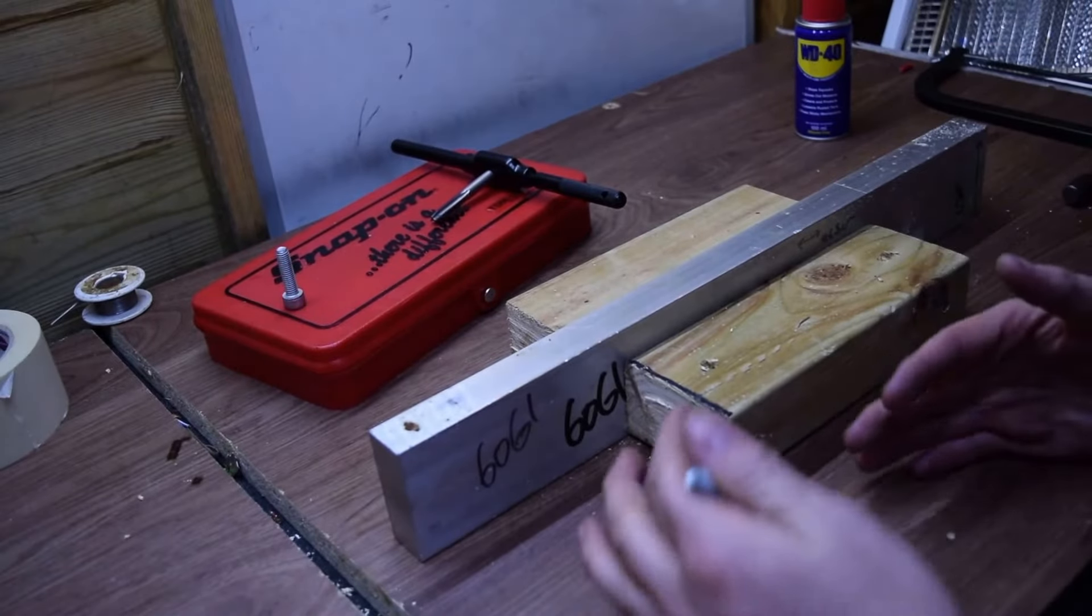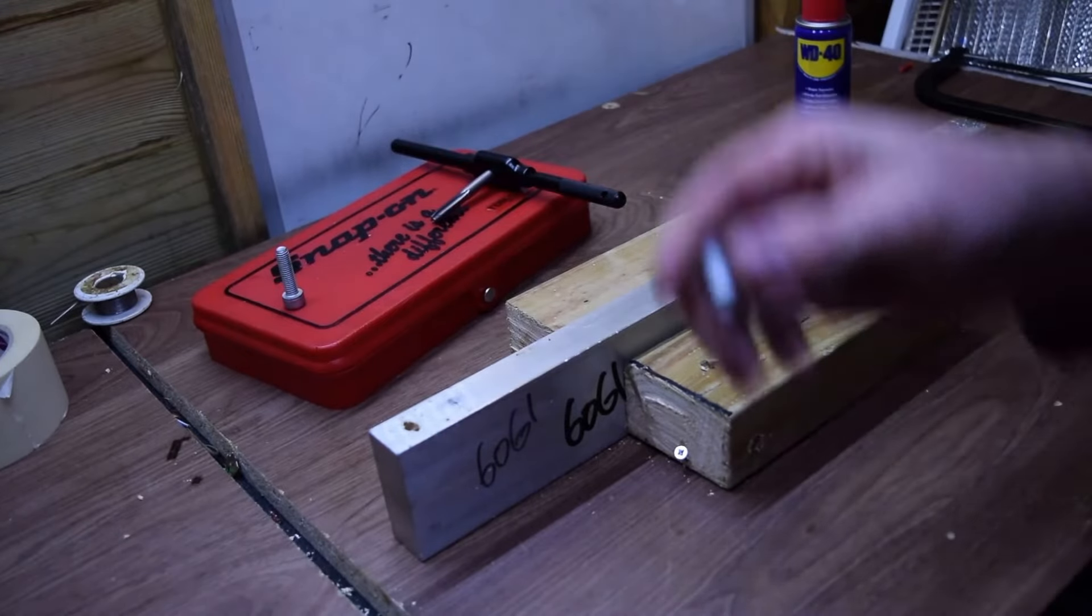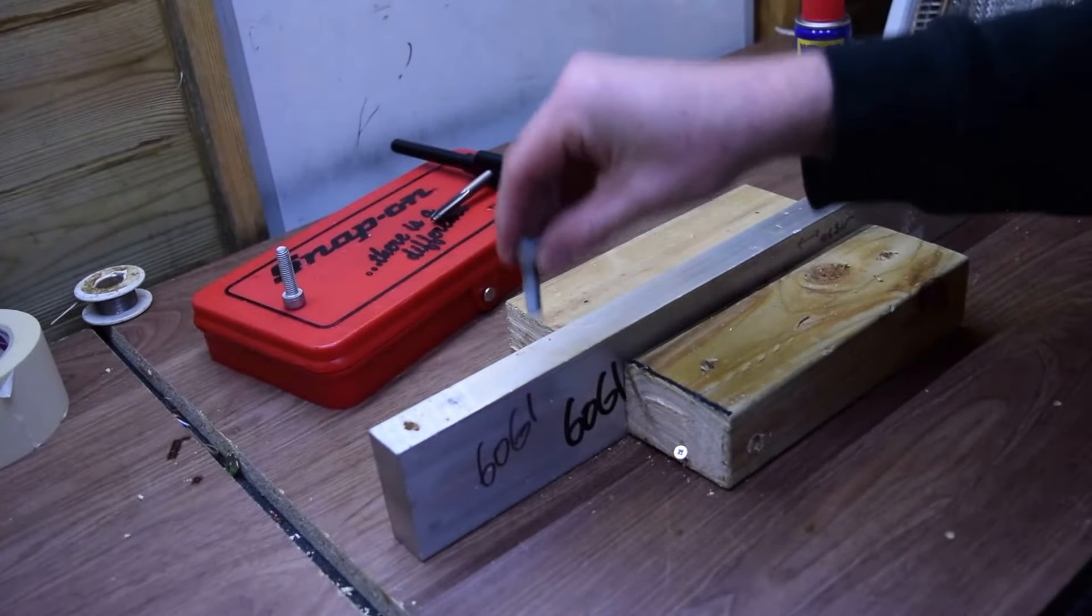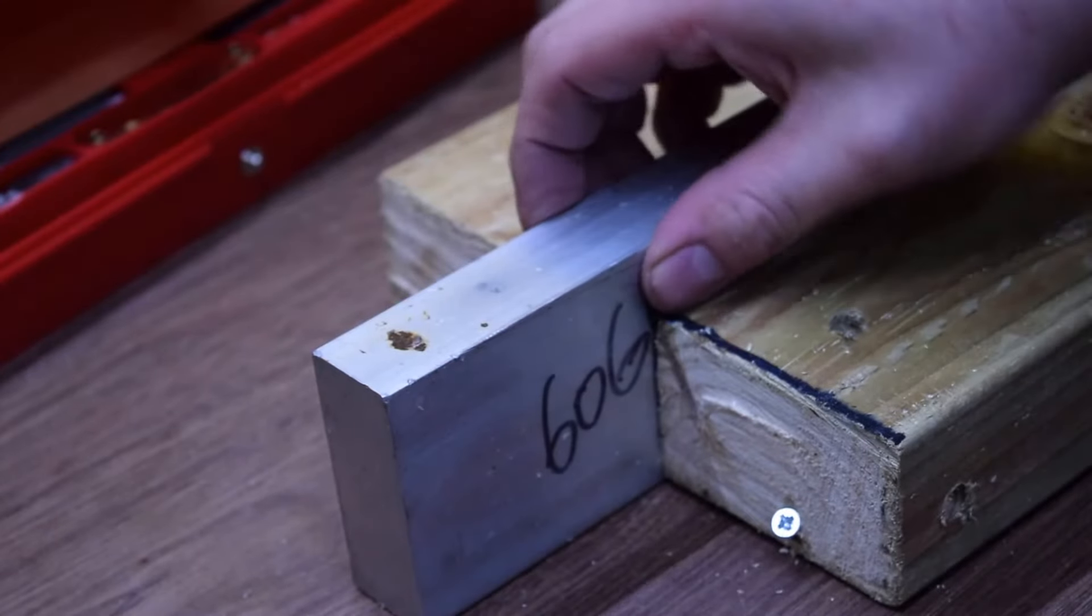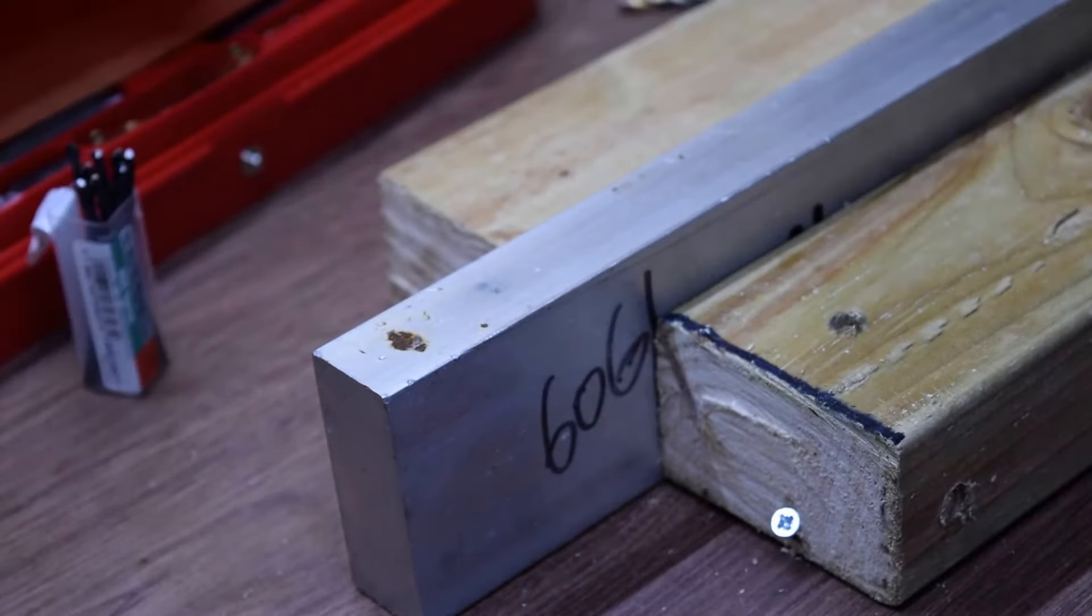Hello, welcome back to the shed. Today we're going to be tapping an M8 hole in some 6061 aluminum bar. Now we have our workpiece clamped firmly. I like to use a little bit of lubrication on any metal I'm cutting.